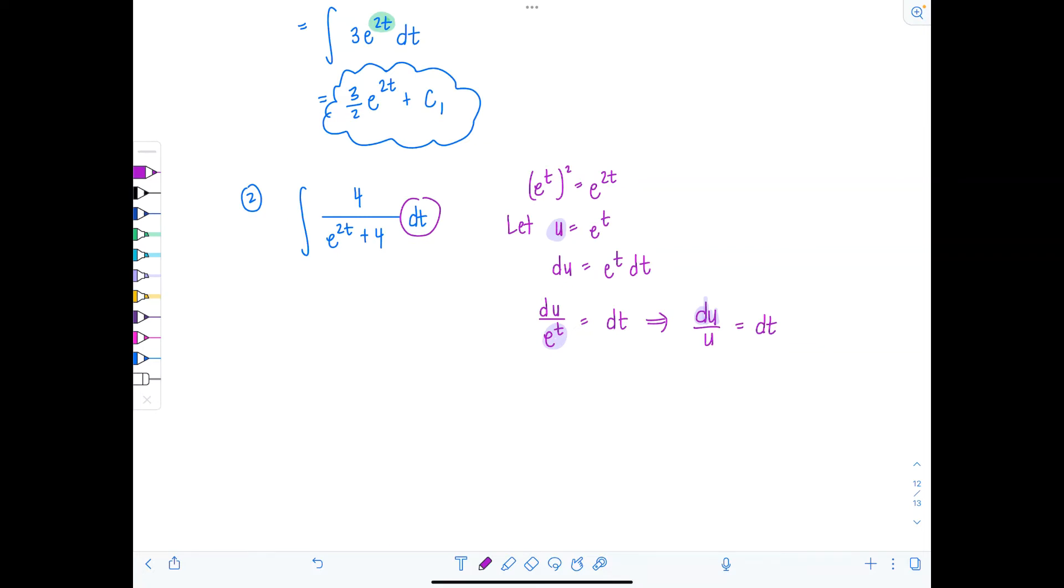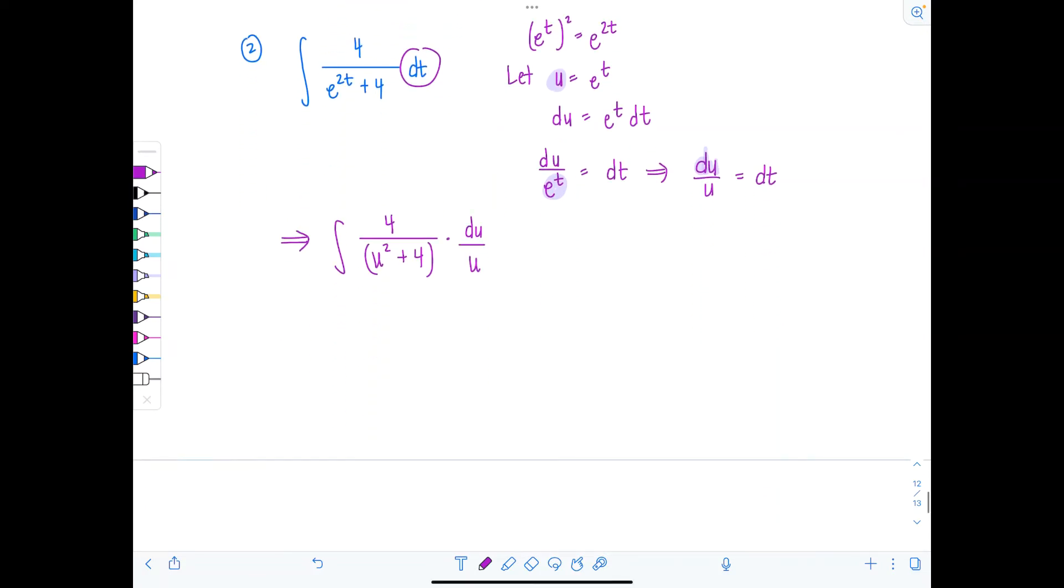All right, so now my new integral in terms of u would be 4 over u squared plus 4 times du over u. And that looks a little peculiar. I'm not loving it. I would rewrite it as just 4 over u times u squared plus 4 du. Beautiful.